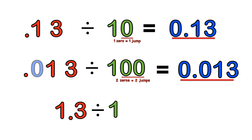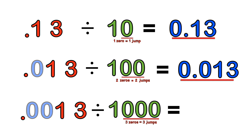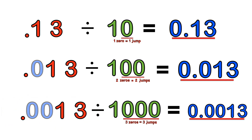For 1.3 divided by 1000: three zeros equals three jumps to the left. We move the decimal point three places to the left. We have two blank jumps, so we need two space-filler zeros. The answer is 0.0013. So 1.3 divided by 1000 equals 0.0013. Again, counting the zeros in the answer equates to the number of zeros in the question.